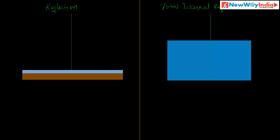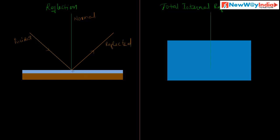If we incident a ray on the mirror, it gets reflected. This is the reflection of light. The perpendicular line drawn to the surface of the plane mirror is called the normal. This is the incident ray, and this is the reflected ray. Because of the smooth polished surface, reflection takes place.